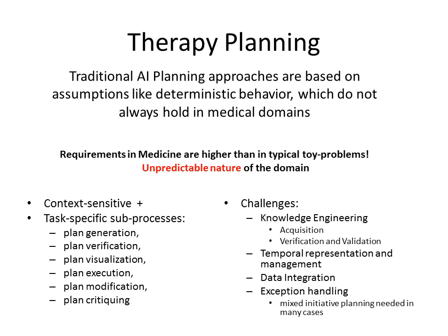If we try to see how to use AI planning for planning the therapy of a patient, the requirements in this domain are higher than in typical toy problems, due to the unpredictable nature of this domain. We will need several specific sub-processes — not only plan generation, but it is really, really important for the safety of the patient to verify the plan. We also need to provide a visualization of the plan, to execute the plan, to modify the plan, and finally plan critiquing, which is analyzing whether the plan being executed is correct and has any problems regarding the original knowledge.